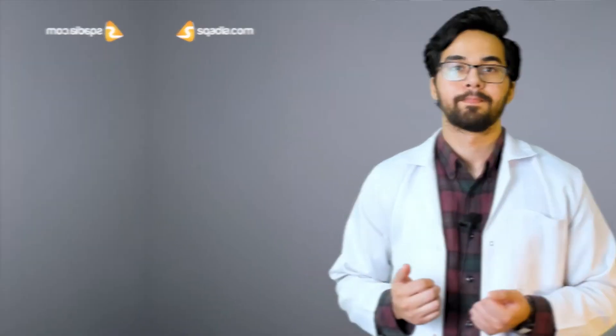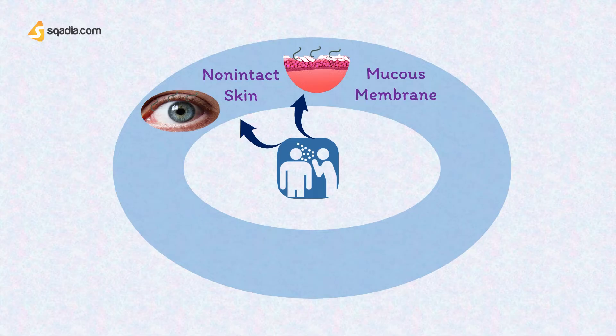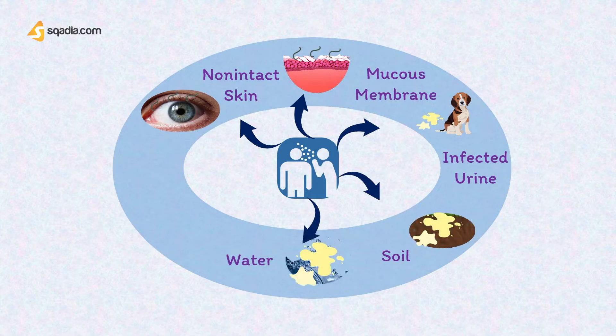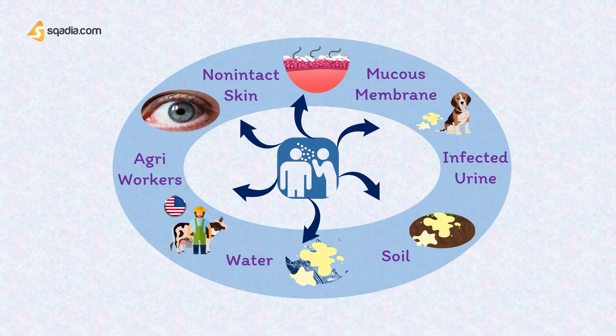Now let's talk about the pathophysiology of leptospirosis. Leptospira can invade non-intact skin and mucous membranes. The infection is acquired by coming into contact with infected animals, their infected urine, or body tissues, and sometimes after contact with contaminated soil and water. Historically, exposures were primarily from recreational water, but more recently the US has seen an upswing in occupational exposures from agriculture workers. This is high yield to remember.